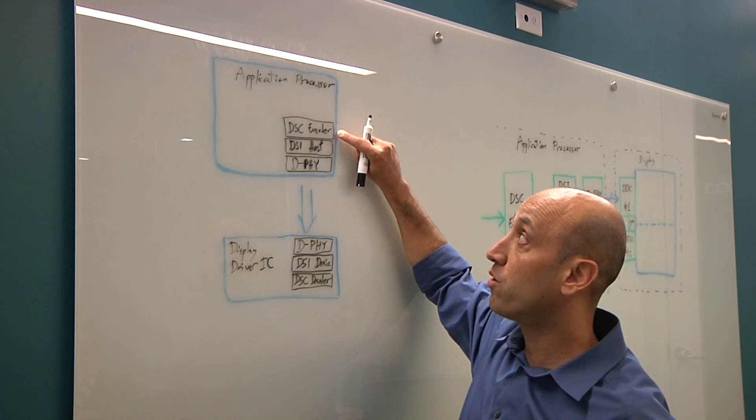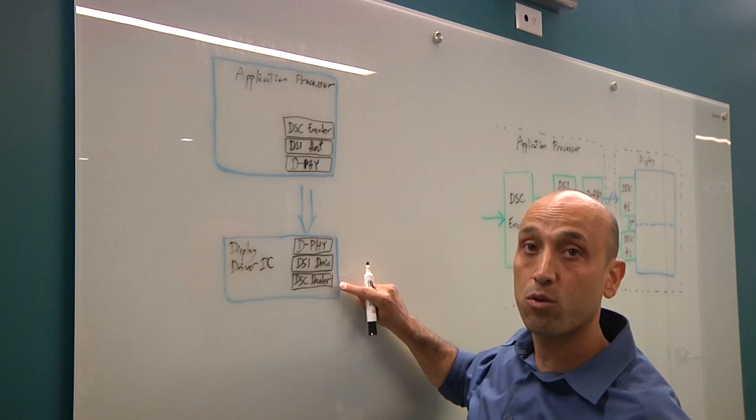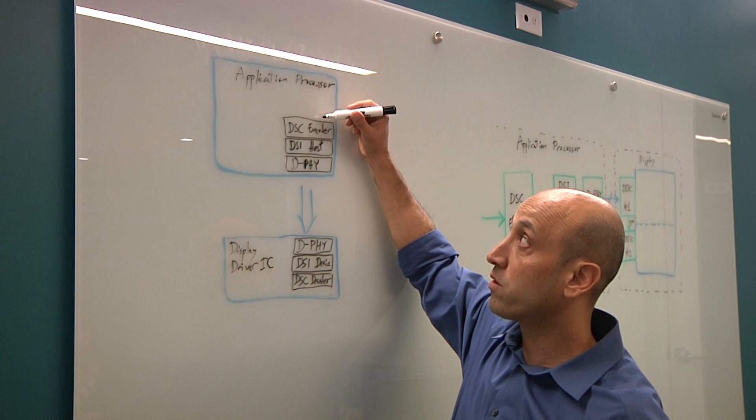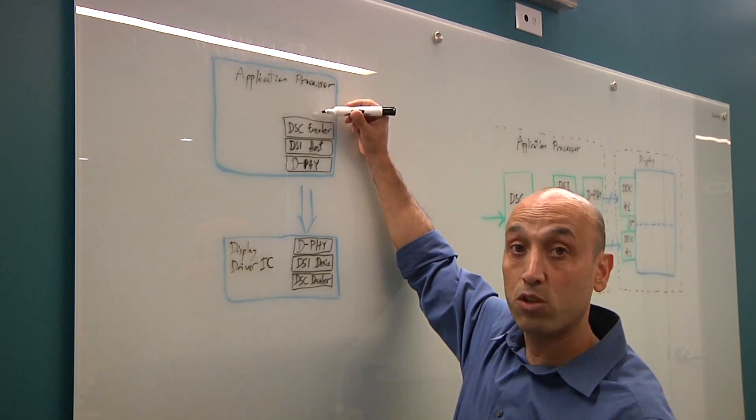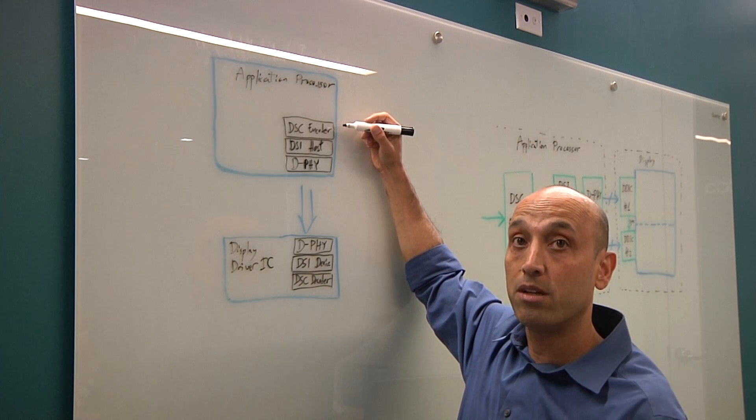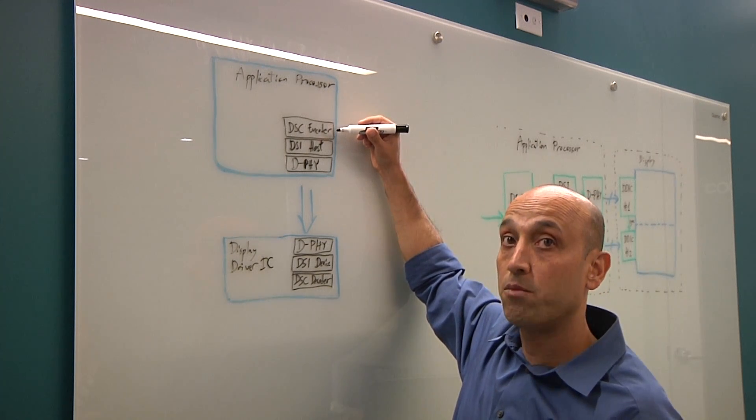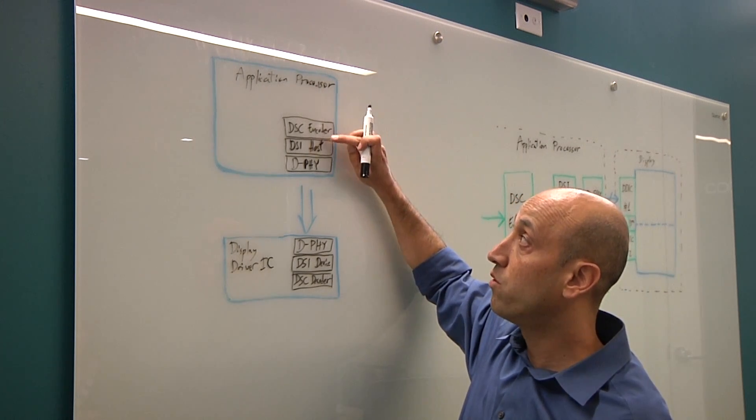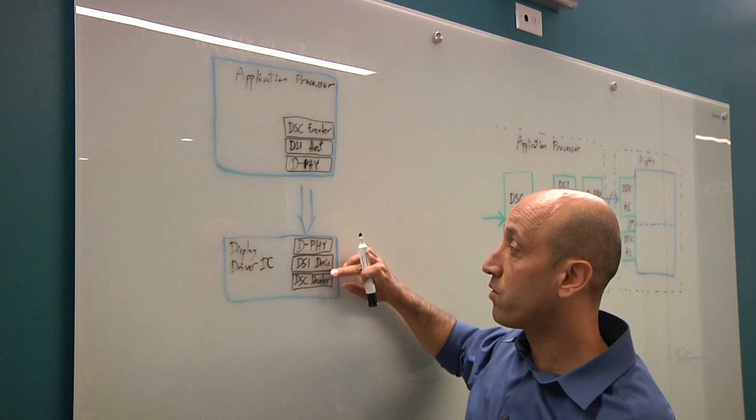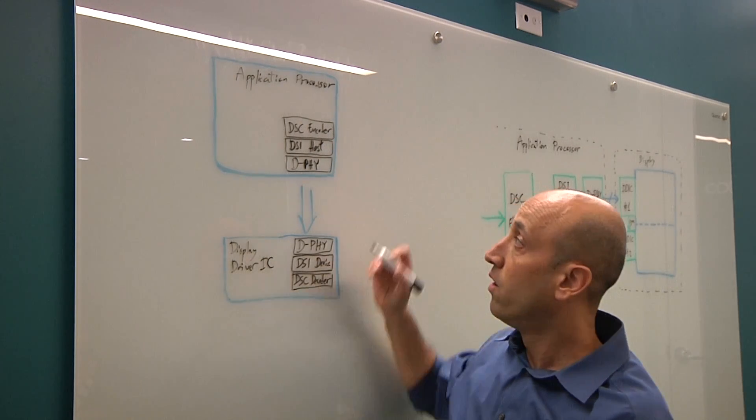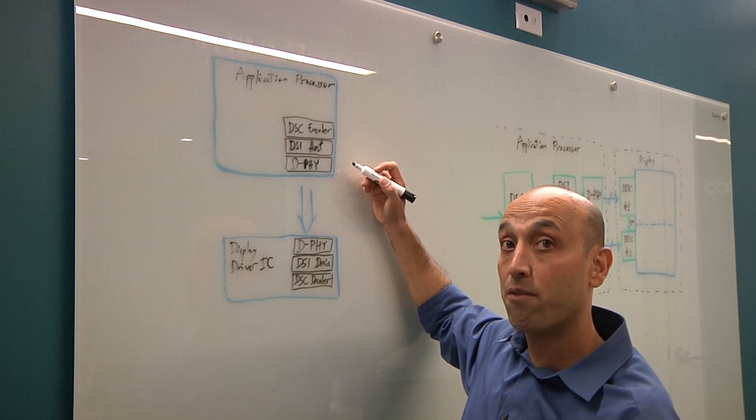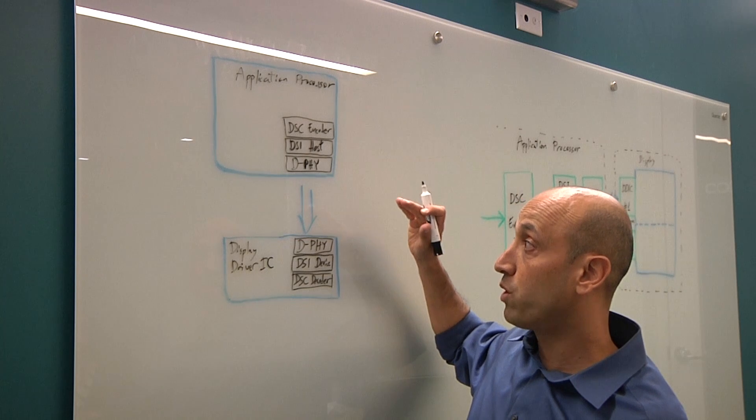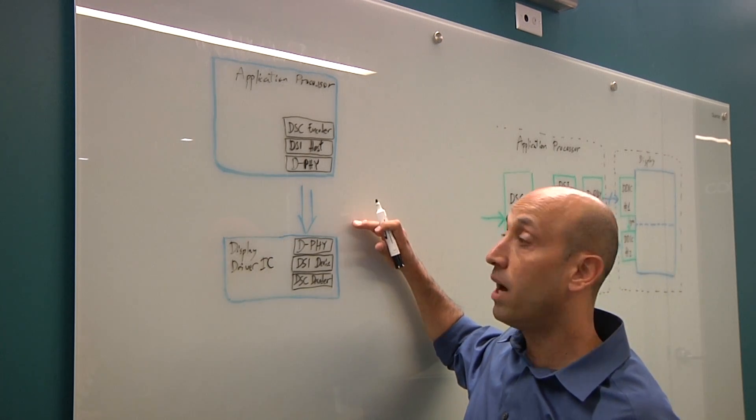This is the DSC encoder on the application processor side and DSC decoder on the display driver side. Both of them allowing you to take the pixel or the video stream that needs to be displayed and to compress it by two or by three. It's done by real-time, low latency, visually lossless implementation, and transmit that through the DSI transport to the other side where it is being decoded and displayed.